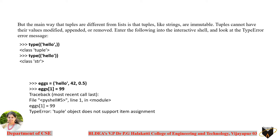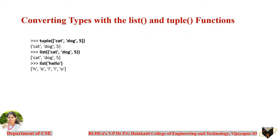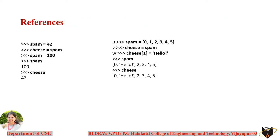You will get the error: 'tuple object does not support item assignment'. This is why the tuple is considered an immutable data type, whereas the same operation on a list is allowed — that's why the list is considered a mutable data type. We also saw how to convert a list to a tuple or a tuple to a list using type conversion.